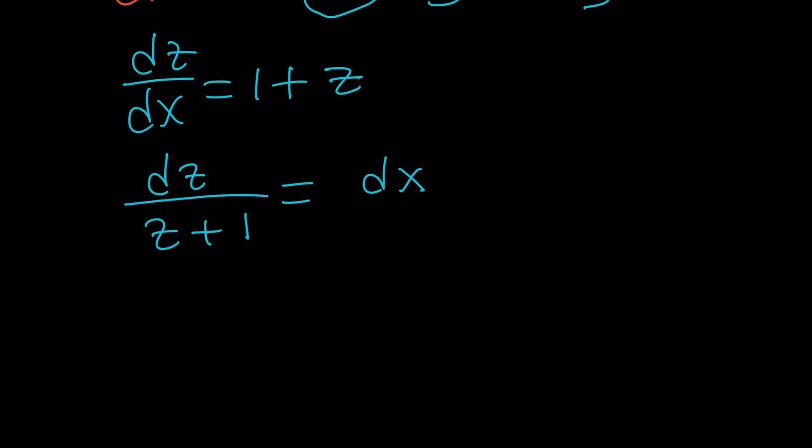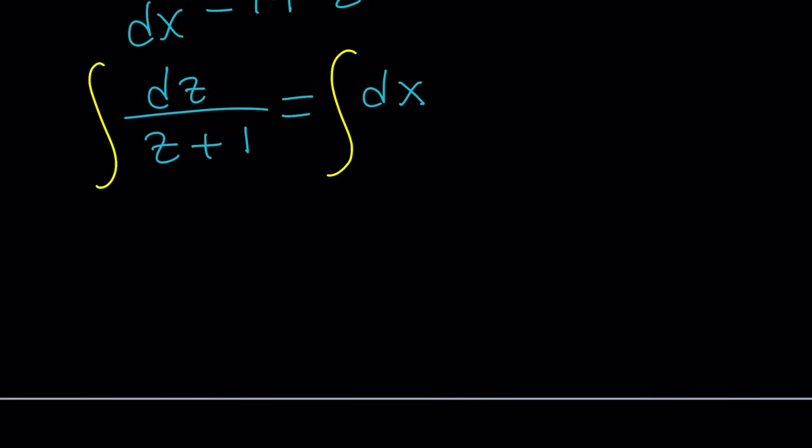So this is the equation I'm getting. And let's integrate both sides. When you integrate dz over z plus 1, I'm going to make some assumptions. You could also use absolute value, but it's kind of messy. And there is no need, as far as I know. I'm just going to assume that z plus 1 is positive.